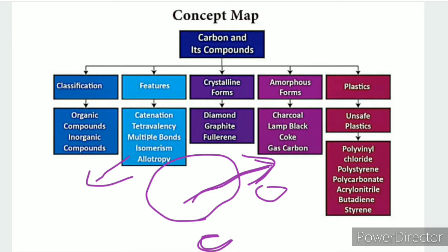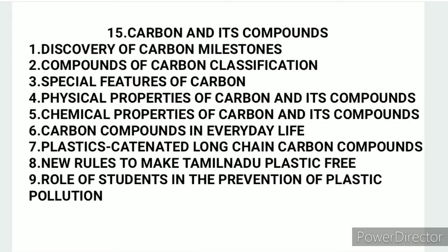The special features of carbon include catenation and tetravalency. Carbon has 4 valence electrons and can form single bonds, double bonds, and triple bonds. We will talk about isomerism and allotropy in the 15th lesson — this is the 3rd topic, the balance part.